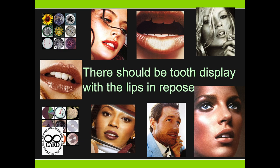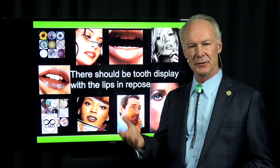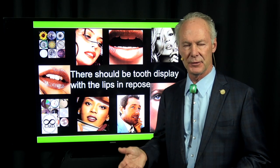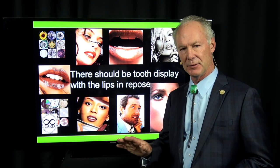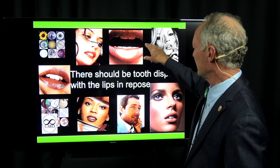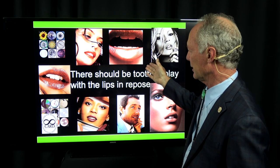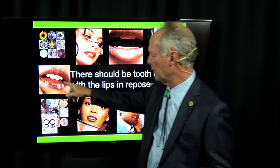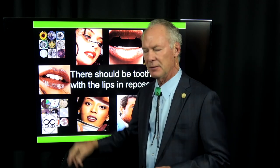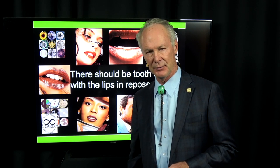There should be tooth display with lips in repose. In dental school they said you want to see about two millimeters of tooth display with lips in repose, but that's not exactly right because there are different lip types. With any lip type — whether it's a flat lip, a moderately arched, or a maximally arched lip — you always want some tooth display with lips in repose.